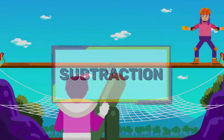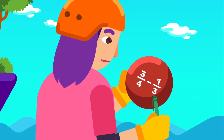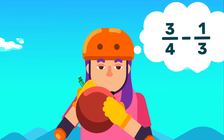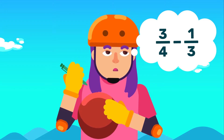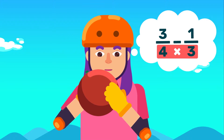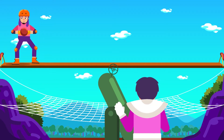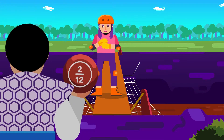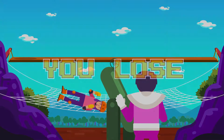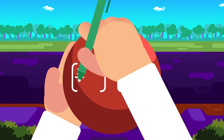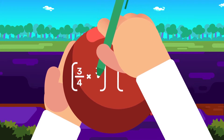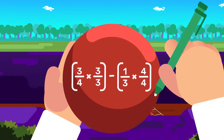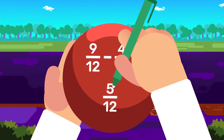Subtraction also requires a common denominator. For the example 3 over 4 minus 1 over 3, find the LCM, or simply multiply the denominators to find a number that both denominators can divide. Remember, whenever you multiply the denominator, the numerator also needs to be multiplied. That means 3 over 4 has to be multiplied by 3 over 3, and 1 over 3 has to be multiplied by 4 over 4. When the denominators are the same, just subtract them.